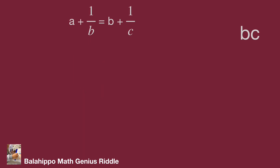So let's start from the first equation: A plus 1 over B equals B plus 1 over C. Move B to the left and 1 over B to the right of the equation. We get A minus B equals 1 over C minus 1 over B.